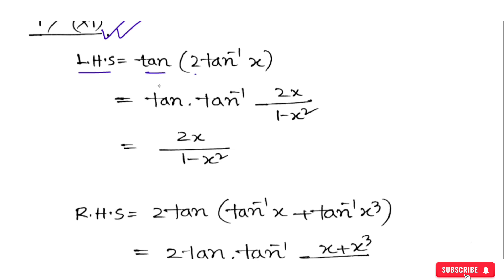What is tan(2·tan⁻¹x)? What is tan⁻¹x? The formula gives us 1 minus x square. So you can see tan⁻¹x squared. This tan⁻¹x squared gives us 2x by 1 minus x square.